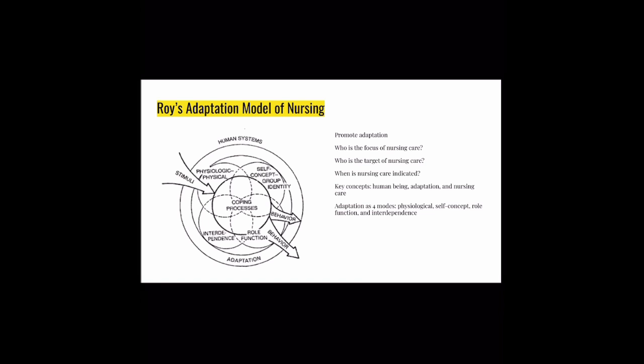As you can see in this diagram, you have human systems and adaptation, with stimuli coming from an outside source. From there, it affects the physiological, self-concept, role function, and/or interdependence. In turn, all of these affect coping processes, which in turn affect behavior.